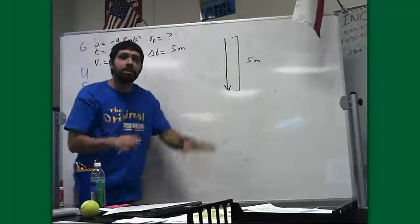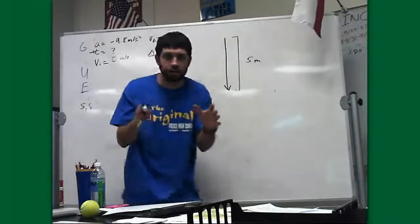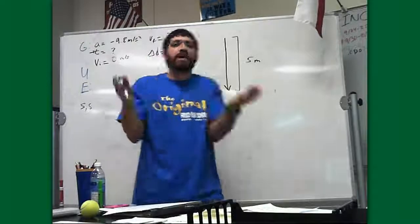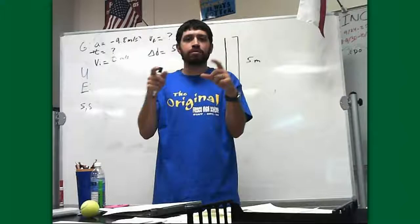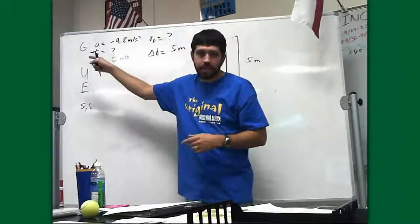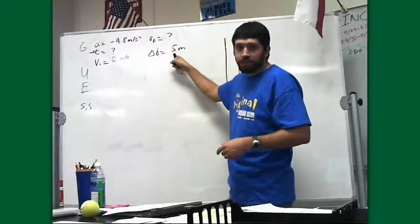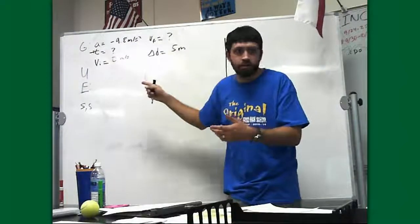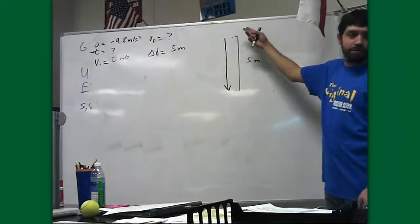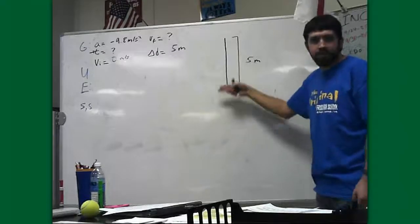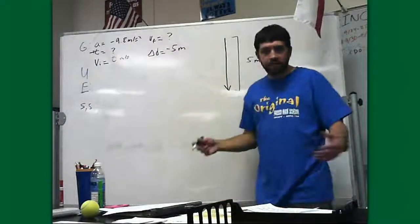We already talked about direction with the acceleration. But let's look at this other number we have here. We have to consider direction with all of these variables except for time. Time is a scalar quantity. You don't say, when somebody asks you what time it is, you don't say 3 o'clock west because that's stupid. Because time only has a number. That's why we don't have to consider direction with time. Everything else, we have to consider direction. So, 5 meters, what direction is that? Well, that's pretty simple to answer because are we falling down or are we falling up? Well, clearly we're going down. And if we're going down, this is going to be a negative distance, a negative displacement.